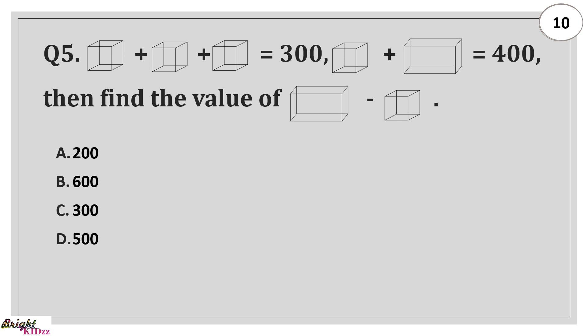Q plus cube plus cube plus cube equals 300. Q plus cuboid equals 400. Find the value of cuboid minus cube. Here the value of each cube is 100 and cuboid is 300. So, 300 minus 100 equals 200.